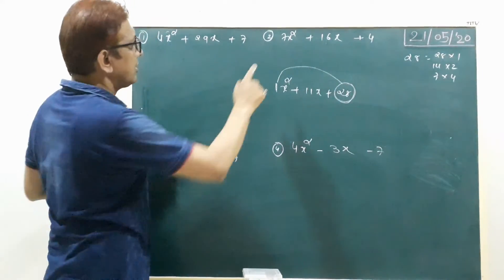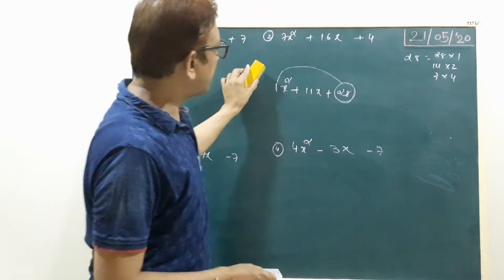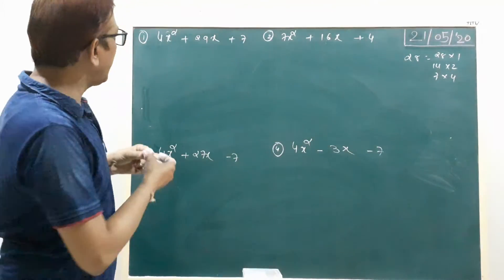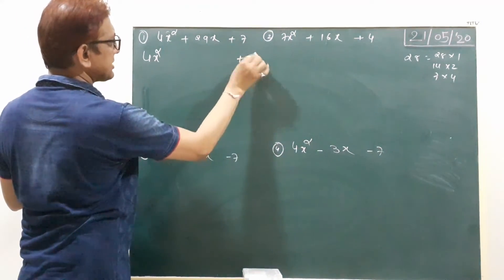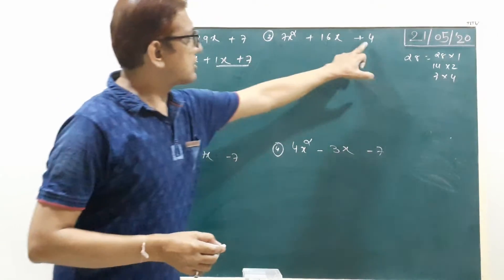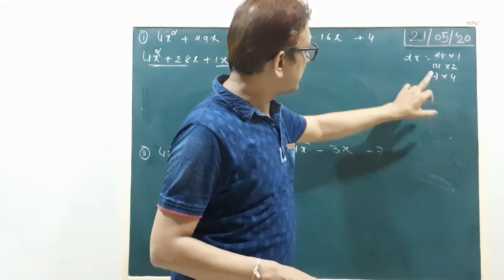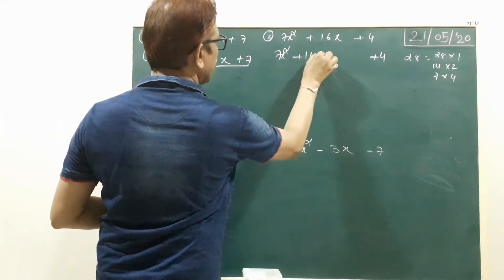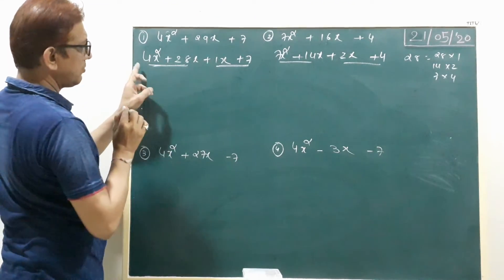Factors of 28: last term is positive, so sum of two numbers equals middle term. 28+1=29 — yes, that works! So we split: 4x²+28x+1x+7. Now take 4x common from the first two terms: 4x(x+7). Then 1 is common from 1x+7: 1(x+7). So x+7 is common, answer is (x+7)(4x+1).